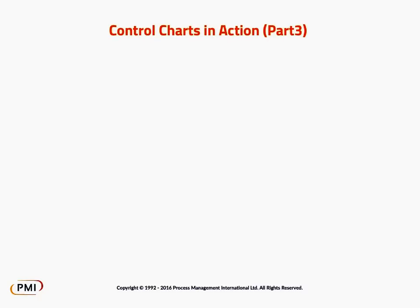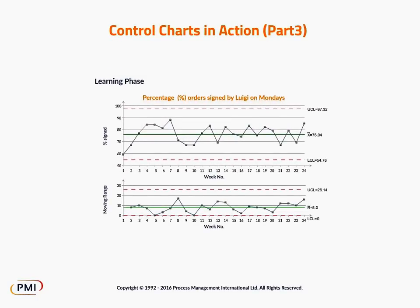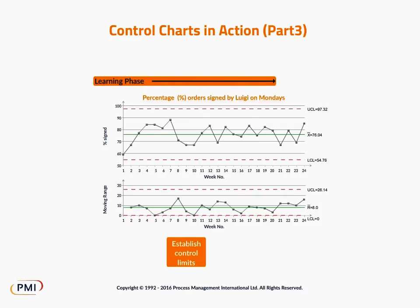The learning phase is when we are trying to establish control limits for the process. We have a learning set of data which we use to establish the limits. Once we've established sensible control limits from our learning set of data and have a set of limits for a stable process, we can move into the operating phase.